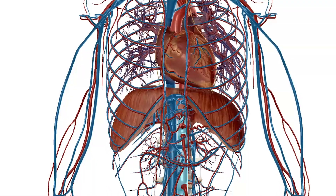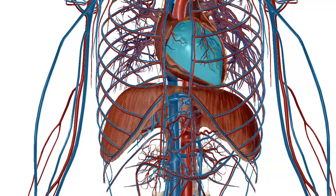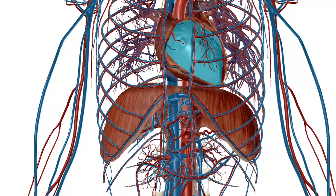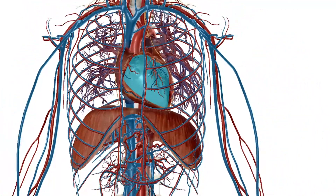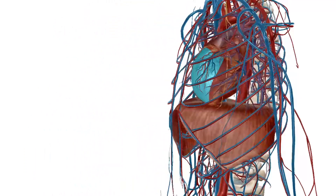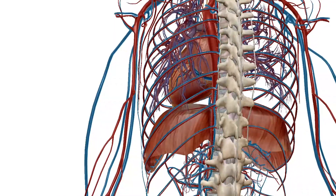Blood pressure consists of two components: arterial systolic and diastolic. The systolic value is the pressure exerted on the vascular wall by blood thrown from the heart towards the vessels when the heart contracts. The diastolic value is the pressure still present in the vessel wall when the heart relaxes.